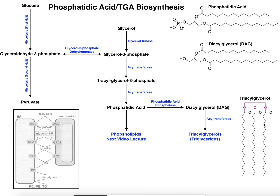Triglycerides don't have a phosphate, so phosphatidic acid phosphatase removes the phosphate from the 3-position, giving us diacylglycerol (DAG) — now with a simple OH group instead of the phosphate. Then a DAG-specific acyltransferase puts a third acyl group onto the diacylglycerol, producing a triacylglycerol (TAG), also commonly called a triglyceride.